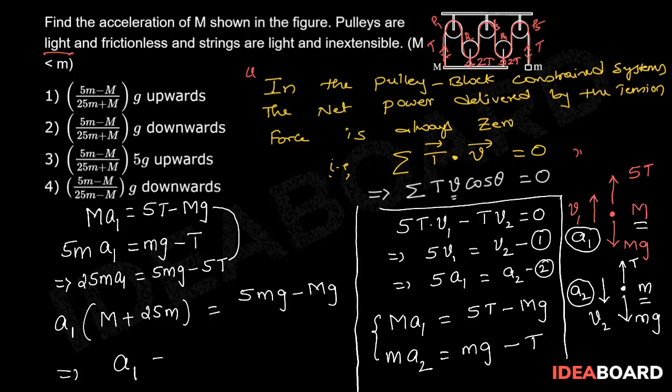we get A1 equal to 5MG minus capital MG whole divided by capital M plus 25M.